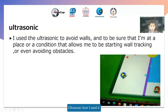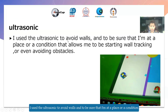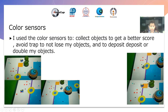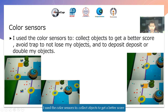Ultrasonic — how I use it? I use the ultrasonic to navigate walls and to ensure that I am at a place or condition that allows me to be sorting while checking for even opening obstacles, like that picture. Color sensors: I use the color sensors to collect objects with a bad score, or to avoid trap, to not remove my objects, and to deposit all the human objects.